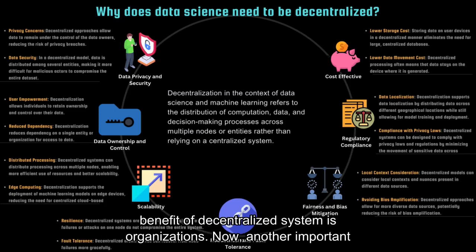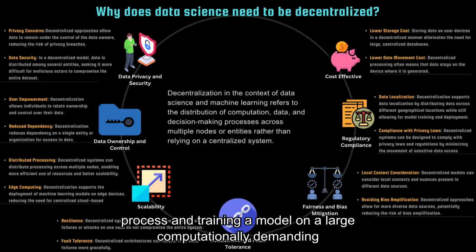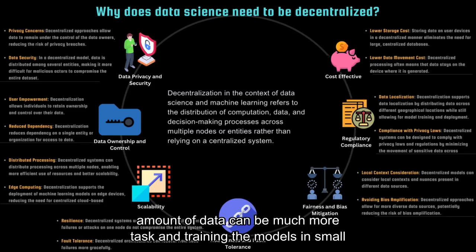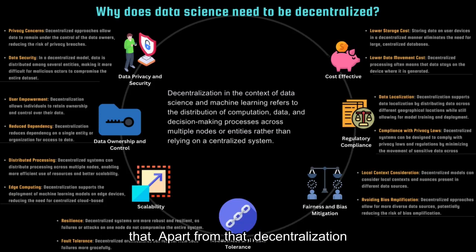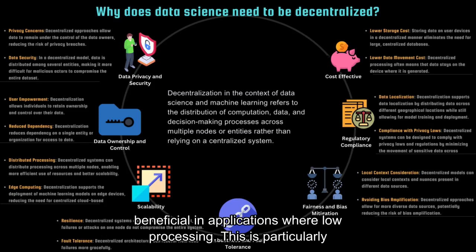Another important benefit of decentralized systems is scalability. Machine learning is a computationally demanding process, and training a model on a large amount of data is really expensive. Whereas, decentralizing the task and training the models on small amounts of data can be a much more scalable approach. Apart from that, decentralization supports the deployment of machine learning models on edge devices, reducing the need for centralized cloud-based processing. This is particularly beneficial in applications where low latency is crucial.